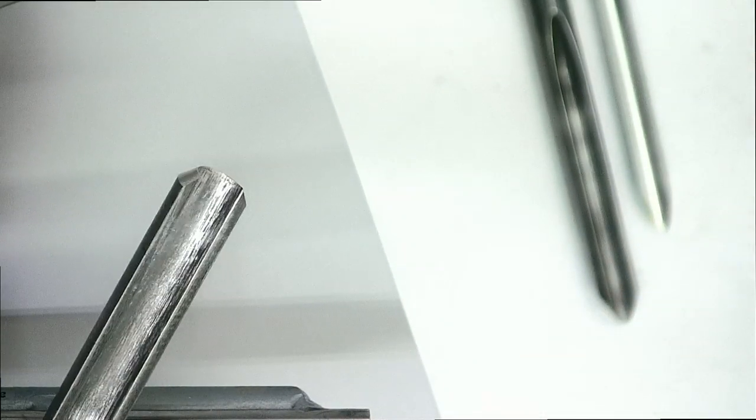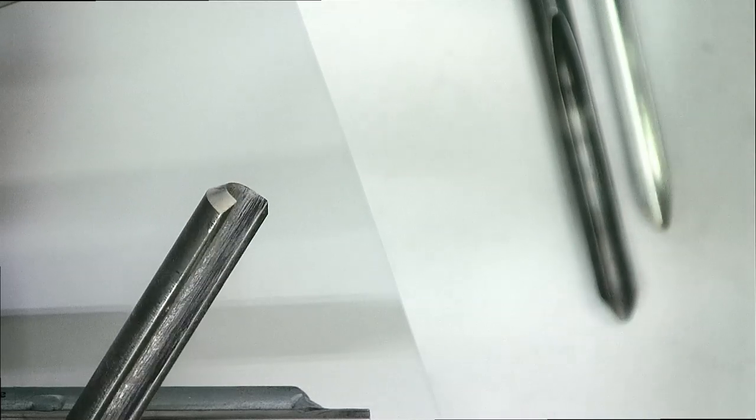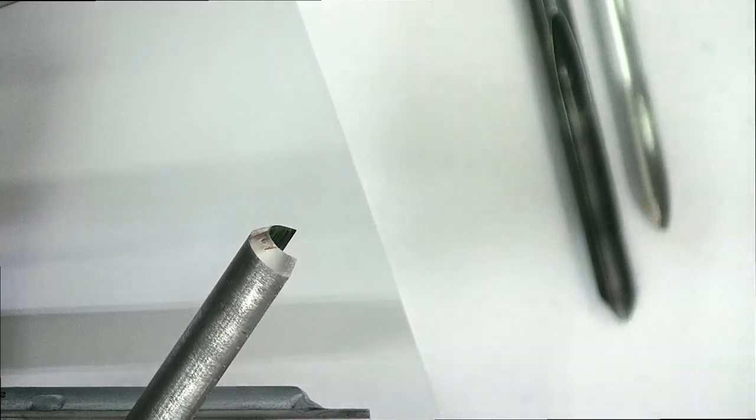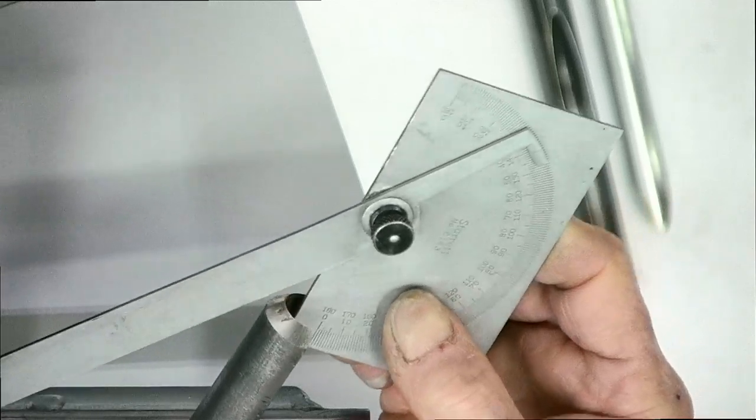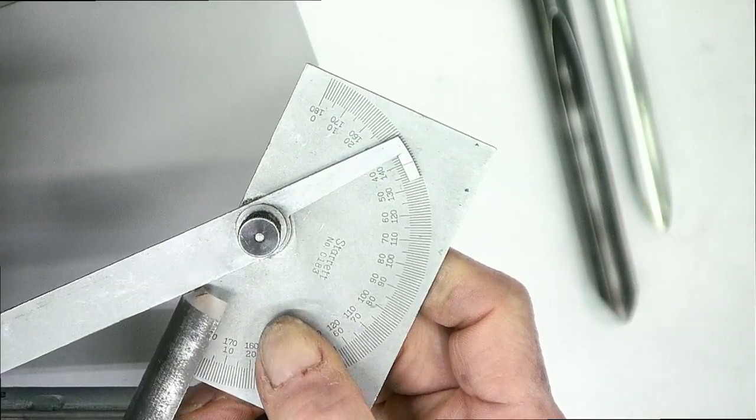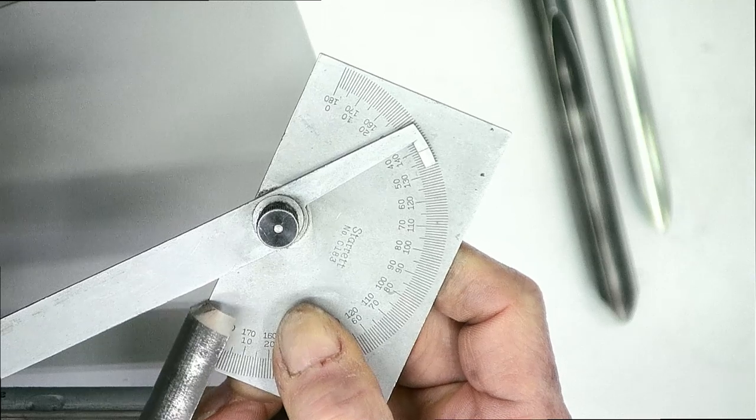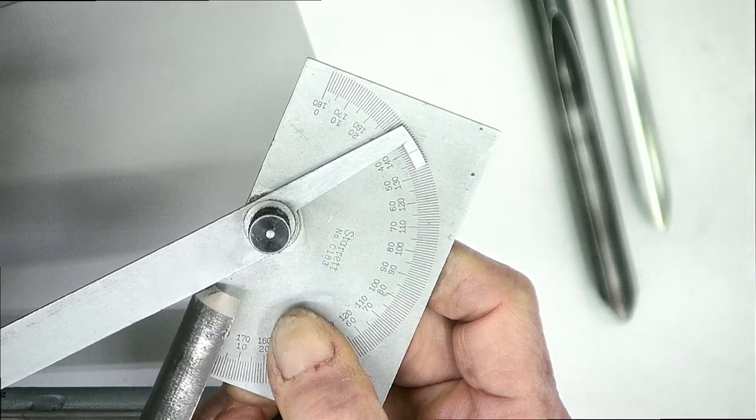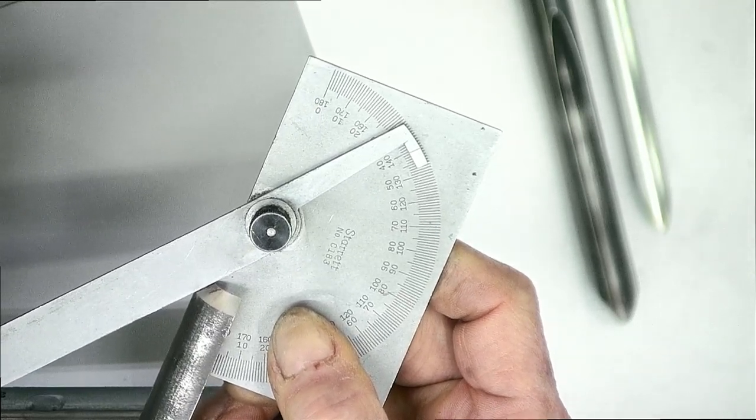All of my gouges, starting here with the spindle roughing gouge, have a cutting edge bevel of 40 degrees. That means if I take my protractor and put one leg in the bottom of the flute and the other up against the bevel, I'll get a 40 degree angle.